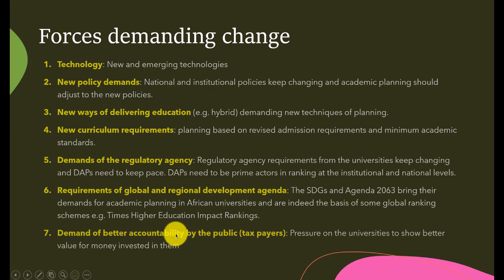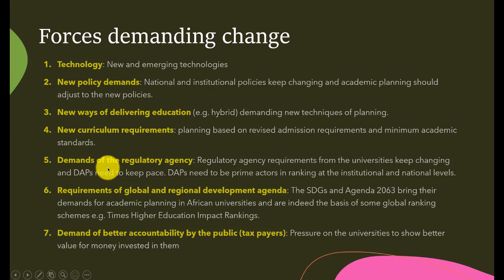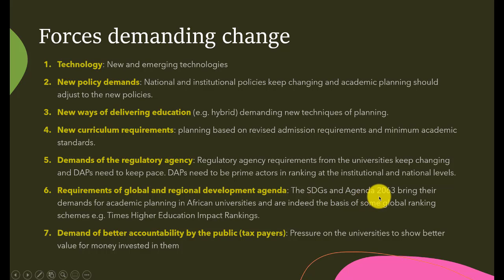What are the forces demanding this change? The force of technology — new technologies are emerging. New policy demands: at national and state level, policies are changing and the academic planner should adjust. New ways of delivering education: we now have hybrid models combining face-to-face with open and distance learning, which demands new techniques of planning. Curriculum is being reviewed, and there are revised admission requirements and minimum academic standards. Regulatory agencies are asking DAPs and universities to change and ask for new things. Requirements of the global and regional development agenda — the SDGs and Agenda 2063 — are bringing demands on academic planning in African universities.